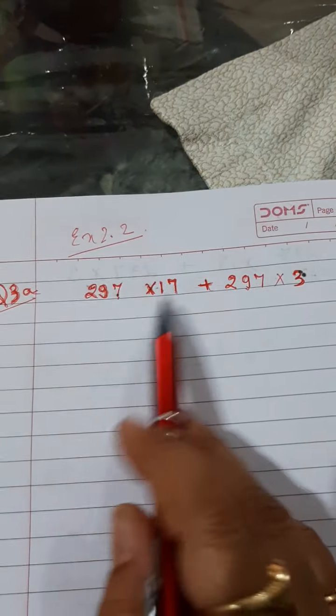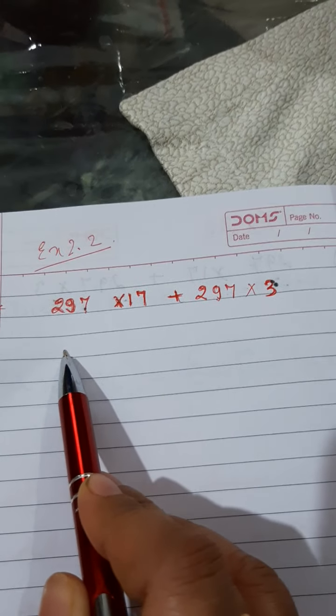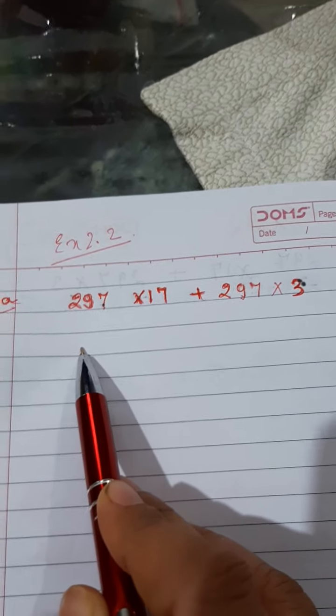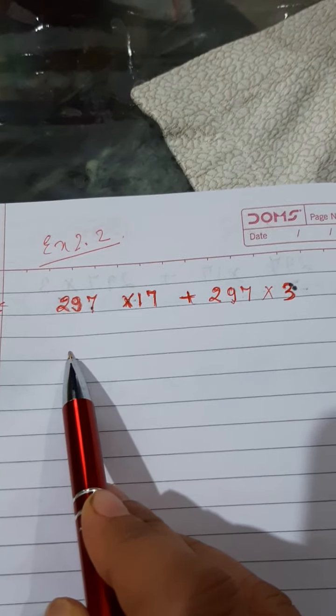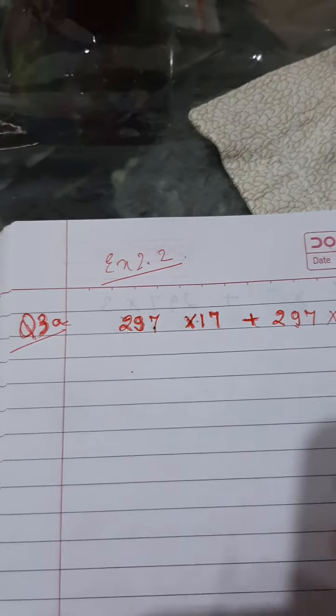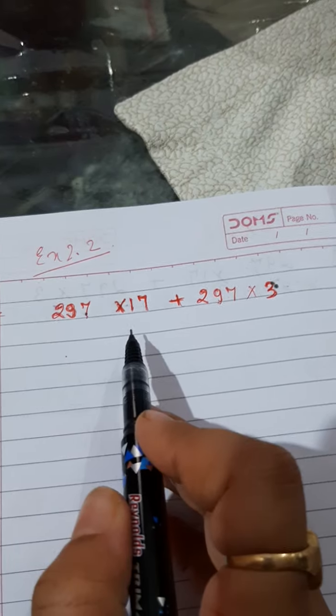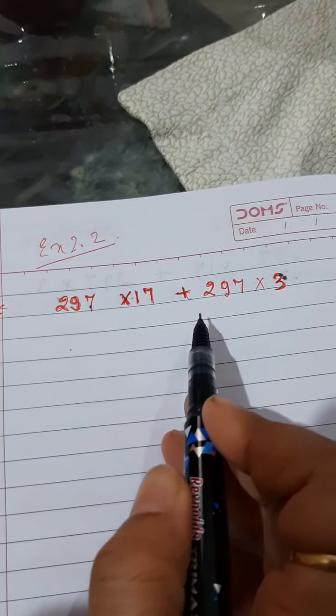Now, children, looking at the question, the first thing that strikes your mind is that this is a question based on distributive property. Why? Because here we have both operations, multiplication and addition.